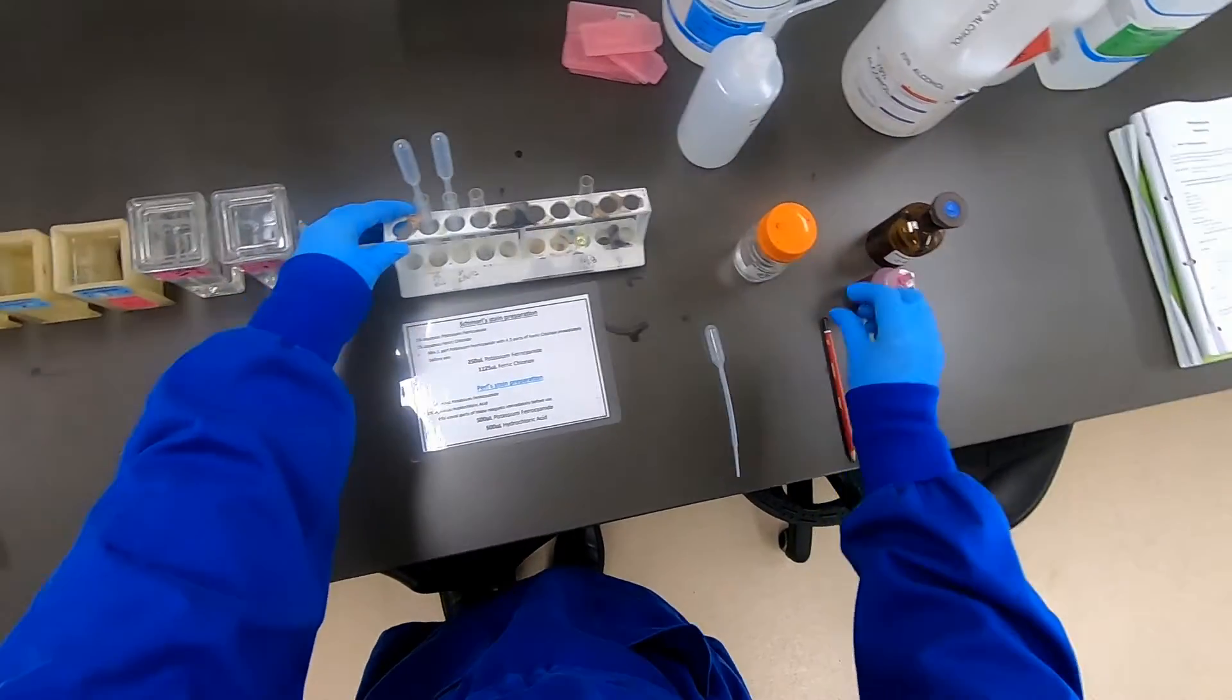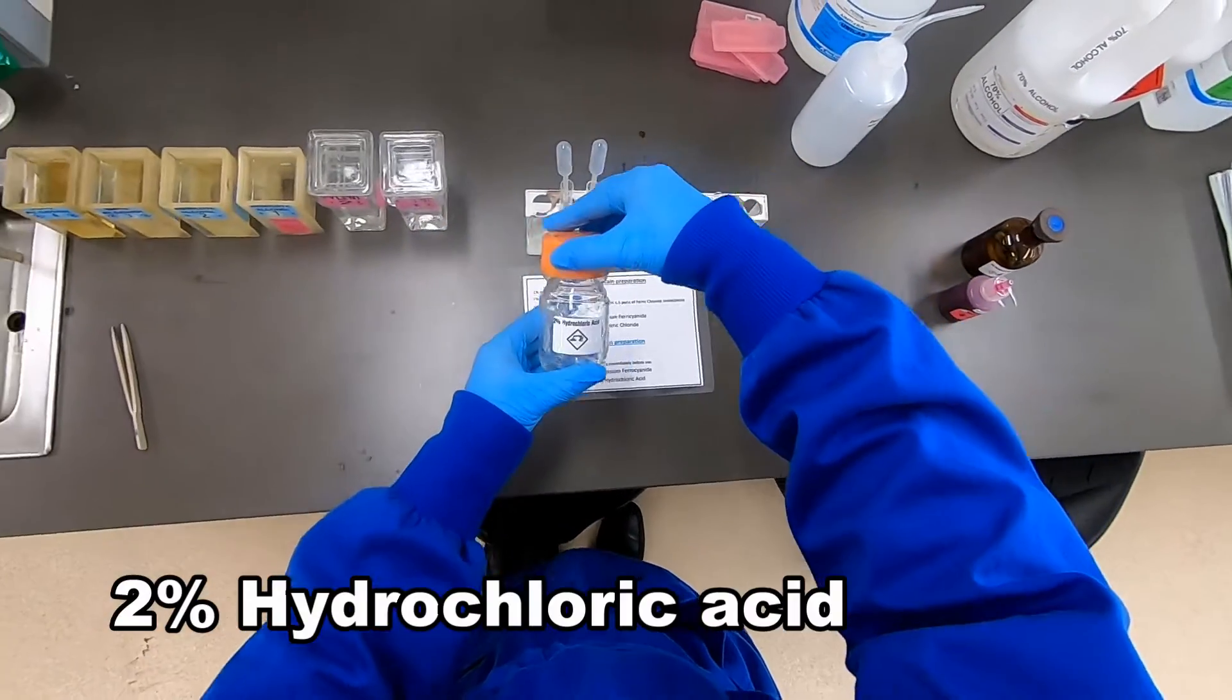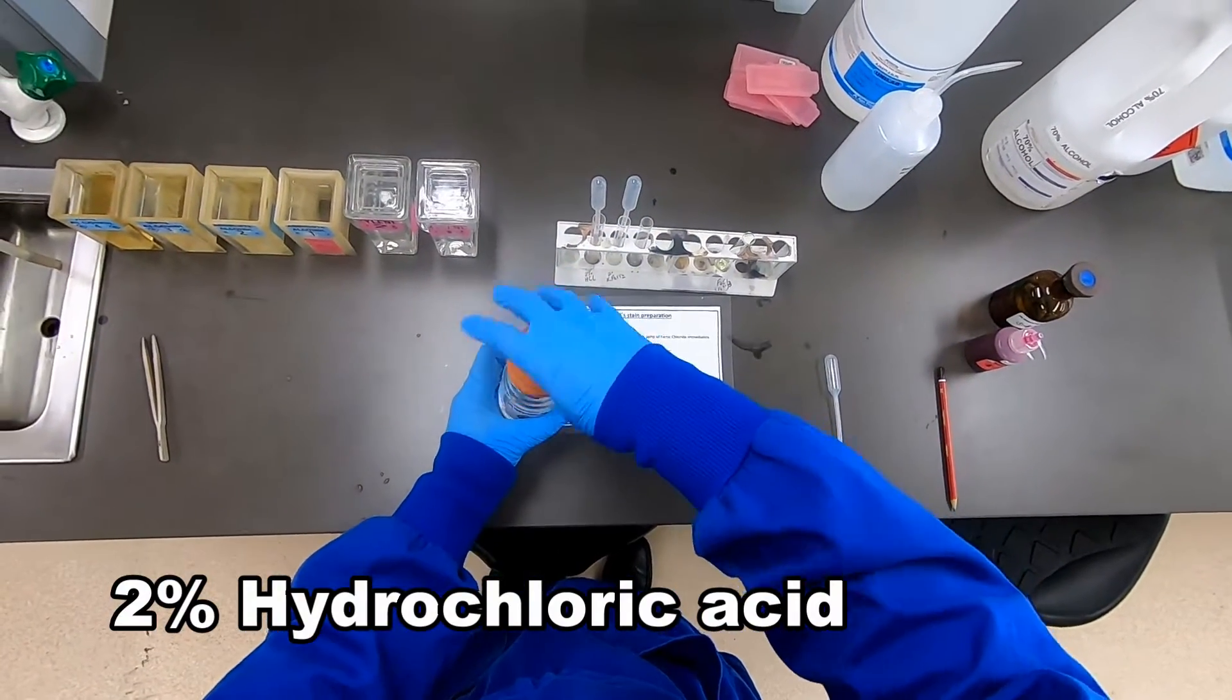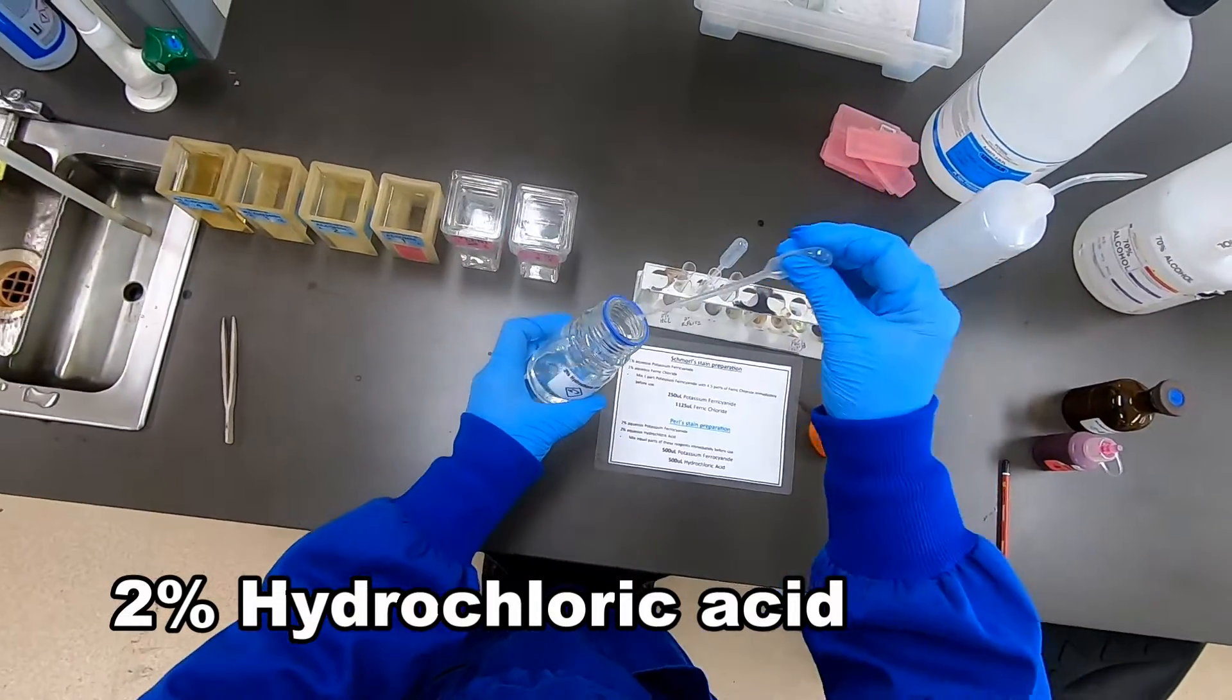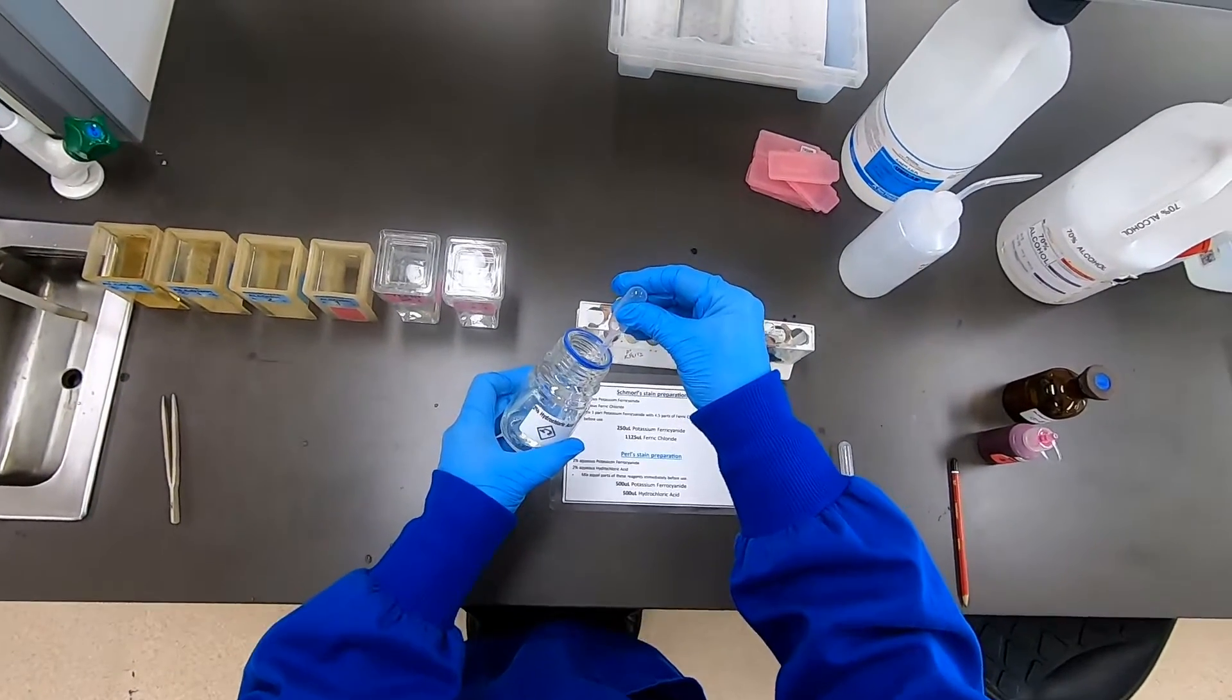After rinsing the slides well, we need to prepare our solution for staining in equal parts of 2% hydrochloric acid.